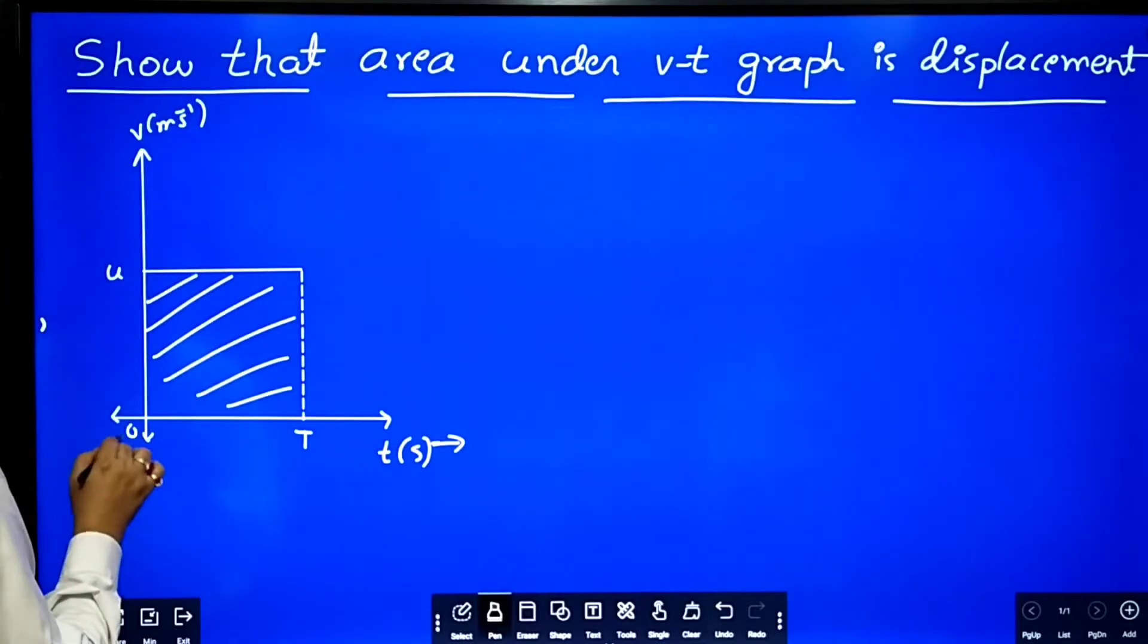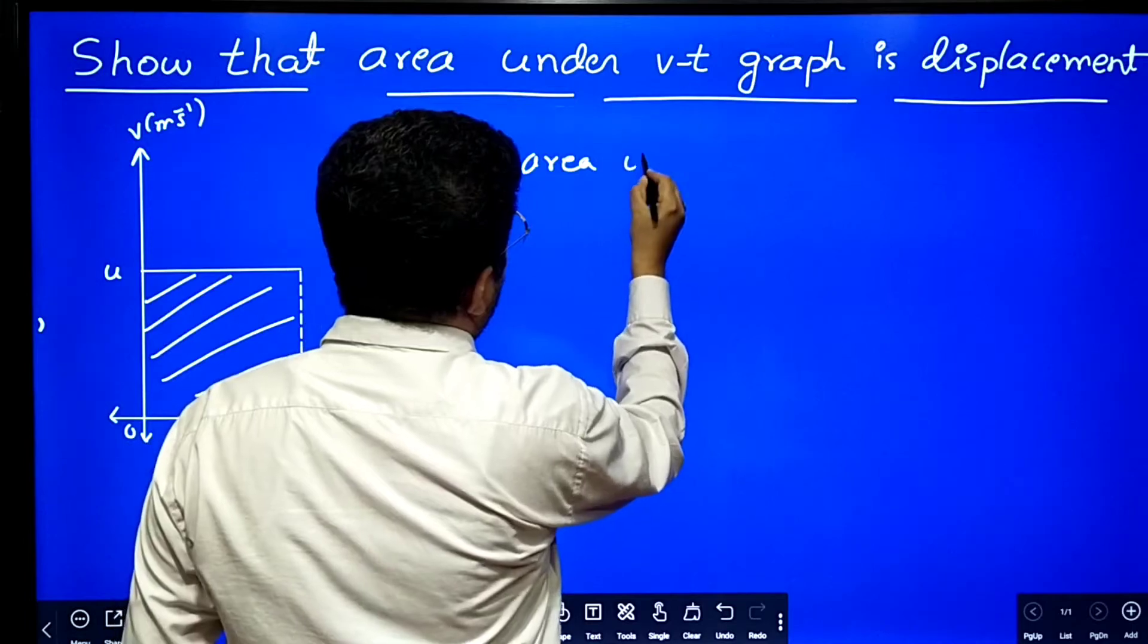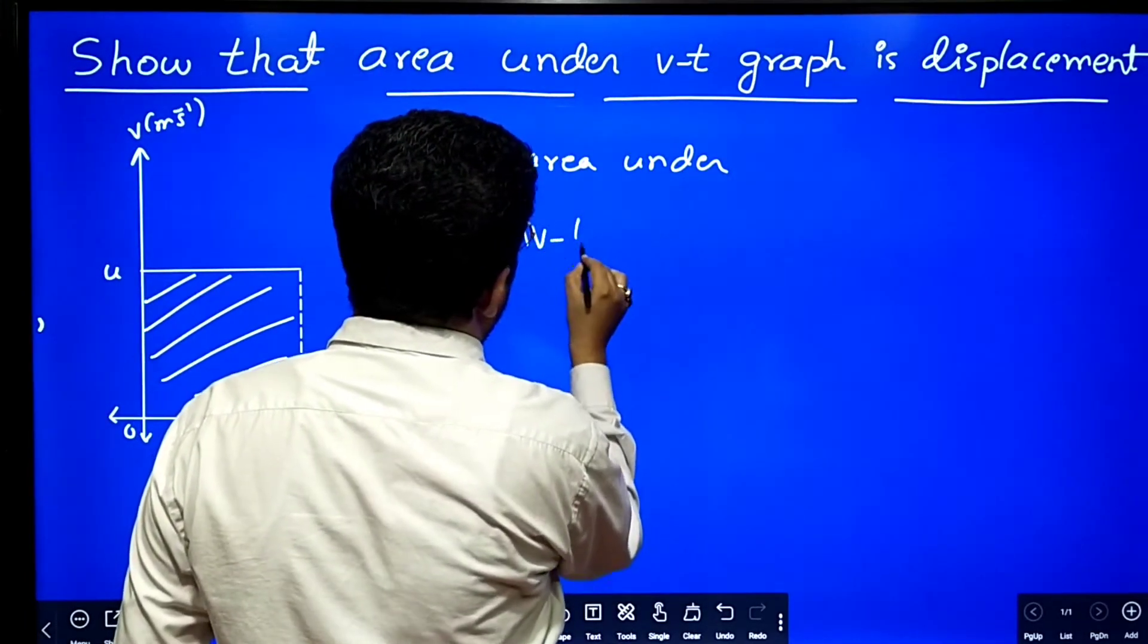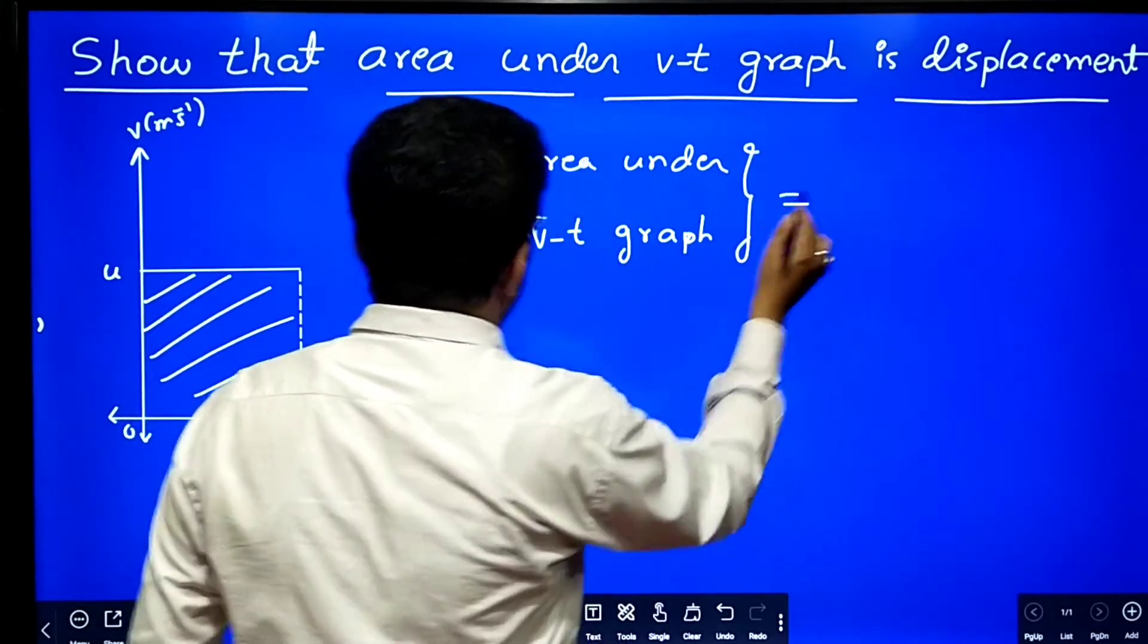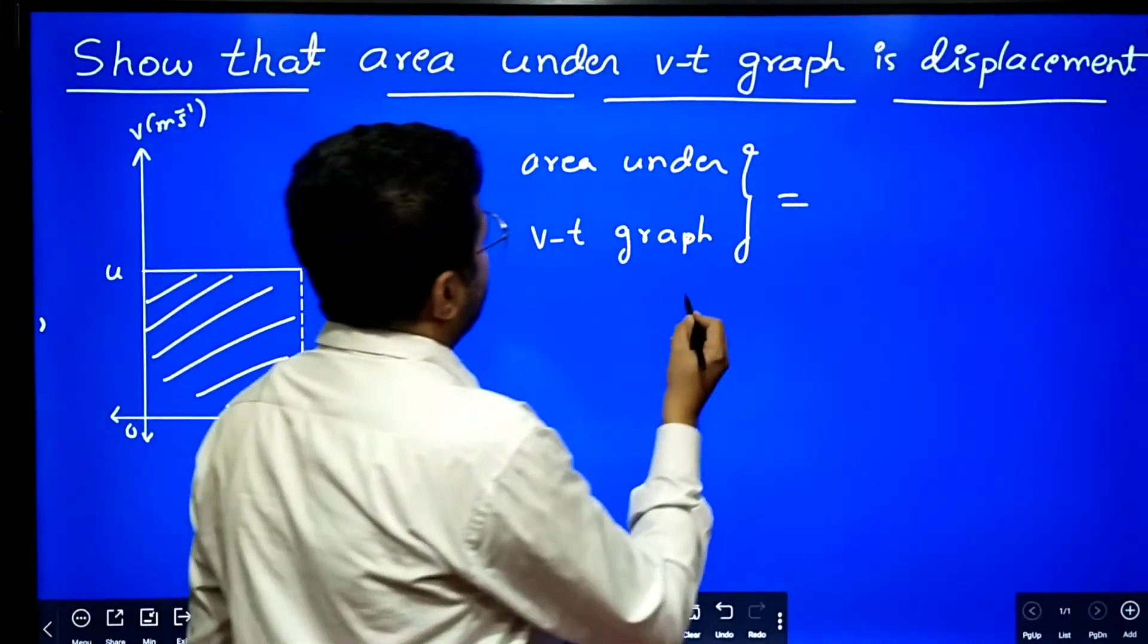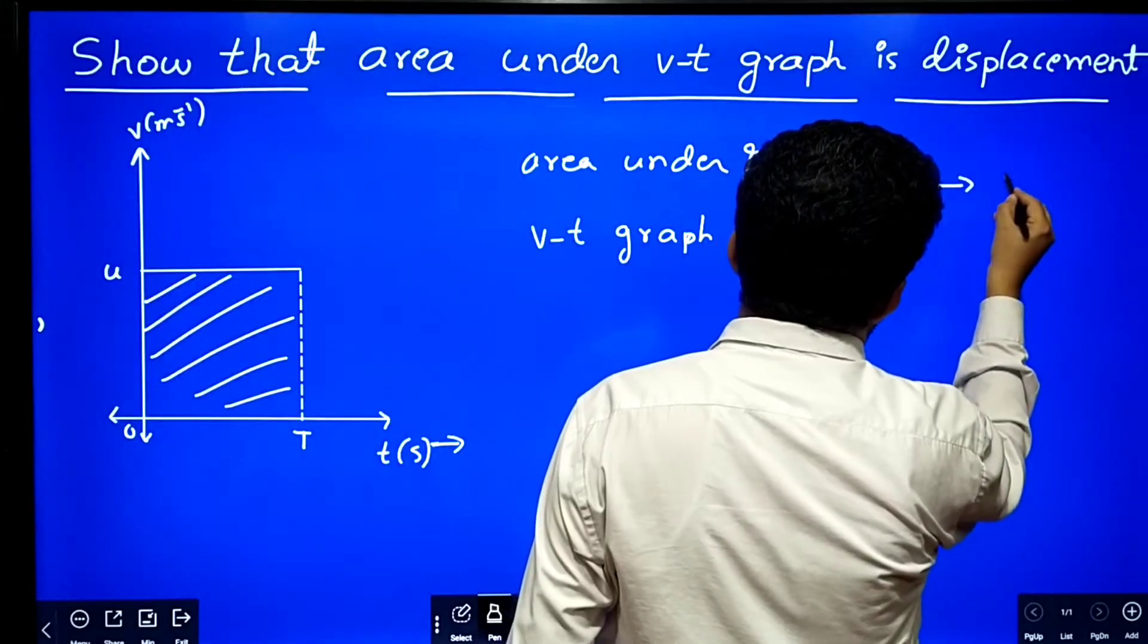Area under velocity time graph is equal to, since it is like a rectangle, it is length into breadth u into t. Area under velocity time graph is equal to u into t. This is our equation number one.